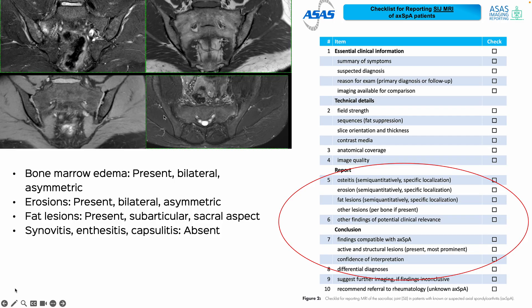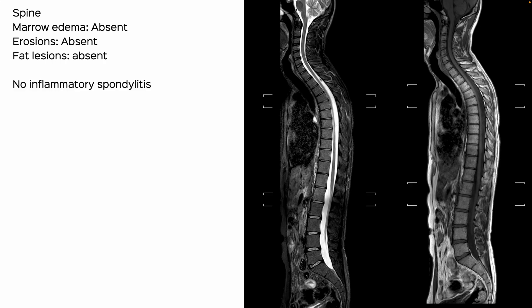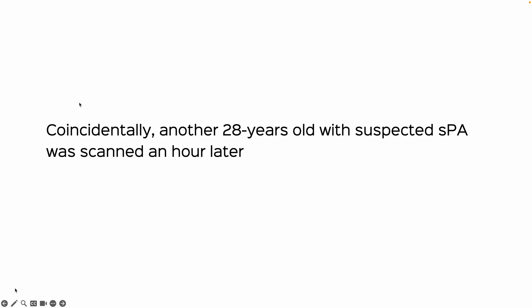In the index case, we have bone marrow edema, bilateral asymmetric erosions, and fat lesions — with other findings absent. This is bilateral inflammatory sacroiliitis consistent with axial spondyloarthritis. In the spine there is nothing, so we can say that it is normal.